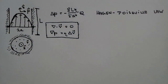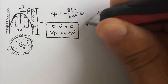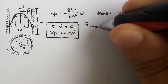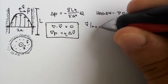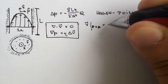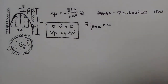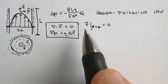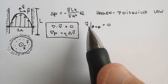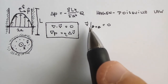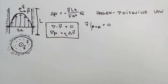The boundary condition is that V must vanish at rho equal to a, the tube wall. That is the only boundary condition we have at this stage.